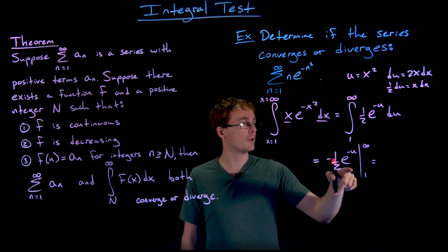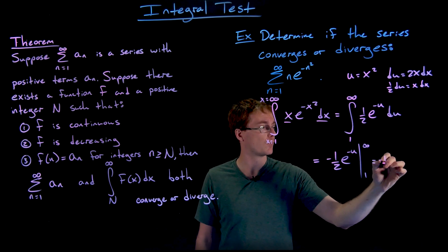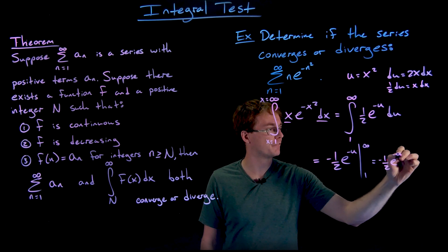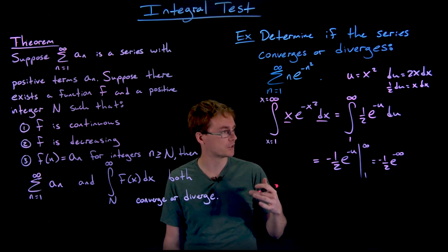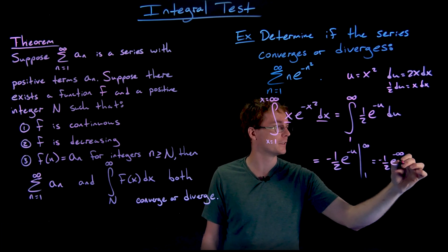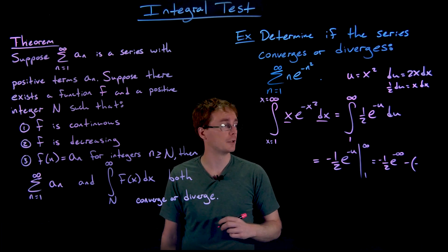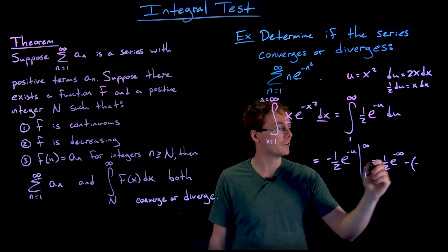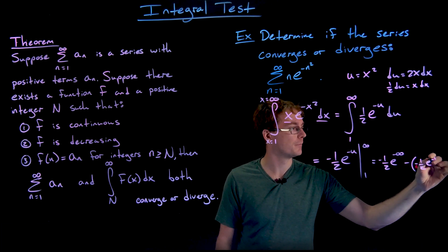The antiderivative of this function is just going to be negative 1 half times e to the power of negative u, and we have to evaluate this at our upper limit of integration as our input is approaching positive infinity, and subtract away from that our antiderivative evaluated at our lower limit of integration, or just 1. So when we plug infinity into our antiderivative, we get negative 1 half times e to the negative infinity. And then we have to subtract away our antiderivative evaluated at our lower limit of integration, so we're subtracting away negative 1 half times e to the negative 1.